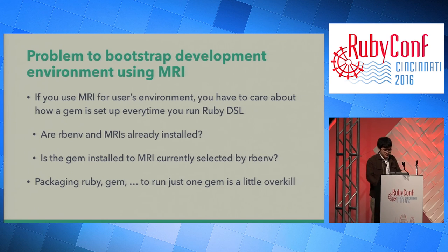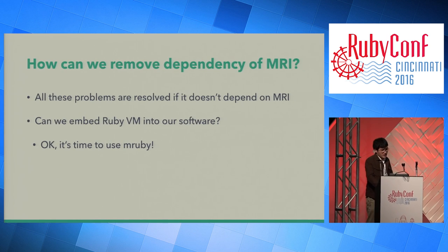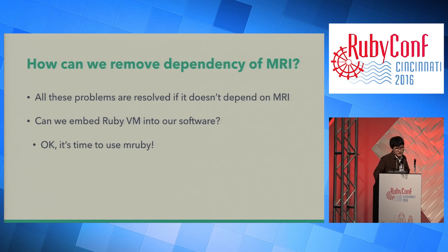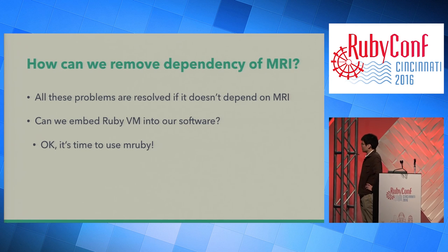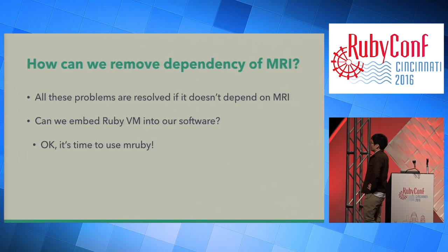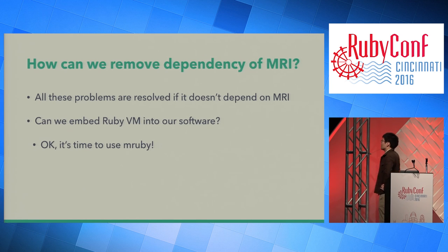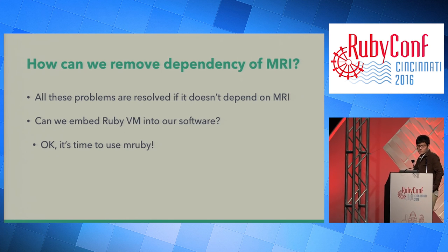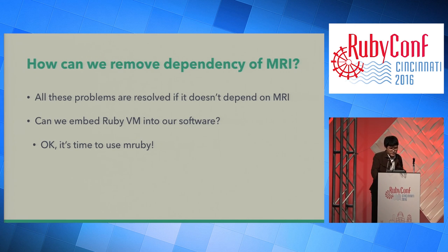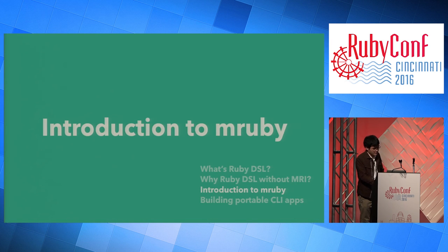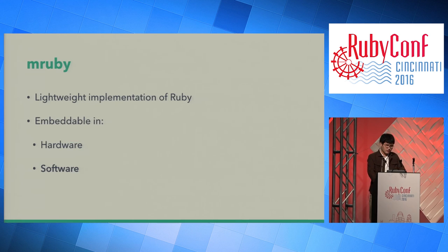Also, if you use MRI for a user's environment, you have to care about how gems are set up every time you run the Ruby DSL to bootstrap the development environment. Packaging Ruby or gem commands to run just one gem is a little overkill and costly to maintain. So how can we remove the dependency on MRI? We want to remove the development dependency on MRI, and all these problems are resolved if it doesn't depend on MRI. Can we embed Ruby VM into our software?